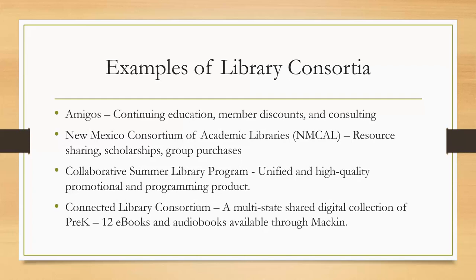Consortia can all be working in different ways, and you're not just a member of one. If I remembered all of them, NMSU is currently a member of about six different consortia, because organizations like Rapid and Illiad are both consortia for interlibrary loan and resource sharing. So these are all different types and examples of library consortia.